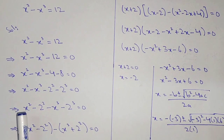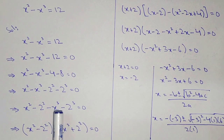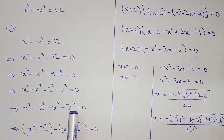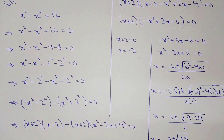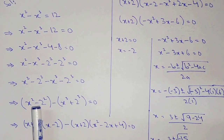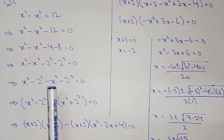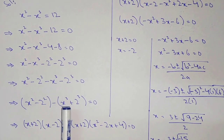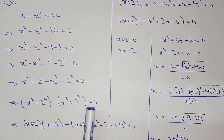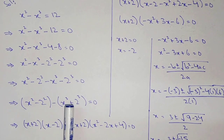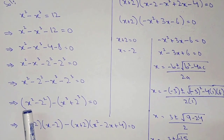Now just rearranging the values: x squared minus 2 squared minus x cubed minus 2 cubed equal to 0. Now here we have two brackets — x squared minus 2 squared — taking minus common from the next two: minus x cubed plus 2 cubed equal to 0, because minus plus gives minus.